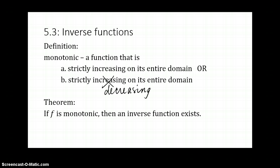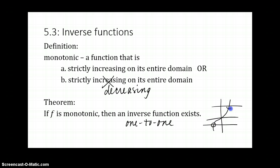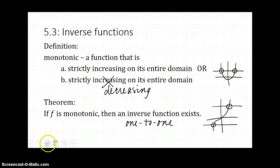From the prerequisite worksheet, a function has to be one-to-one in order for an inverse to exist. We looked at graphs of functions — if a function passed the horizontal line test, meaning a horizontal line only intersects the function in exactly one spot, an inverse function would exist. With a quadratic, a horizontal line intersects for two different x-values, so we had to restrict the domain. Looking at the definition of monotonic, a function that is decreasing then increasing is not monotonic, whereas a strictly increasing function does have an inverse.